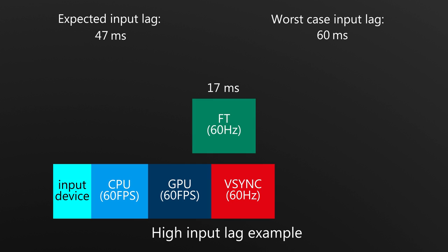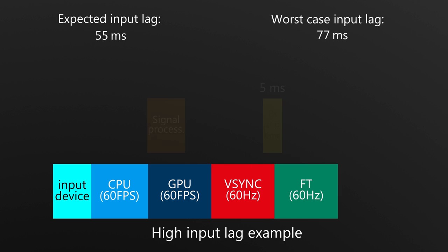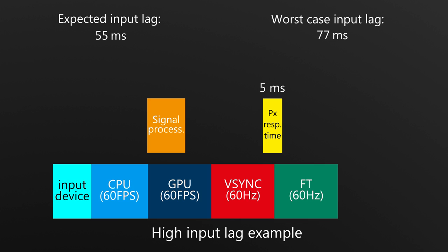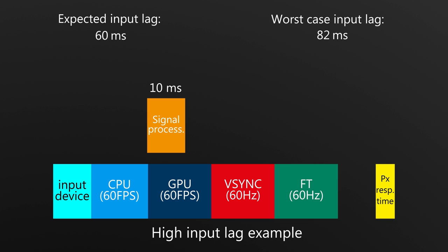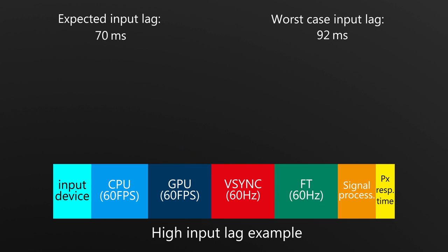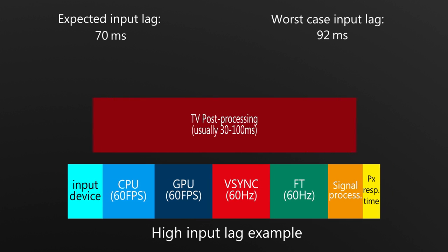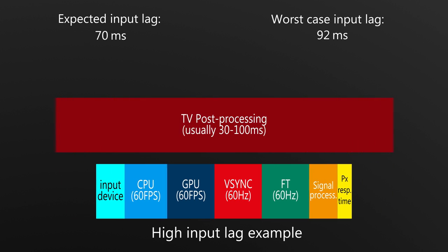Once the frame is rendered it will be sent to the monitor. How long it takes to transmit the whole image depends on your refresh rate. The monitor adds two extra layers of input lag: pixel response time, which is given in the monitor's specifications, and signal processing, which is usually the bigger factor. The only way to find that however is looking at third party reviews. If you're playing on a TV, make sure to enable game mode if it has one and disable all post processing. Post processing alone can add up to 150ms of input lag, which is very noticeable.